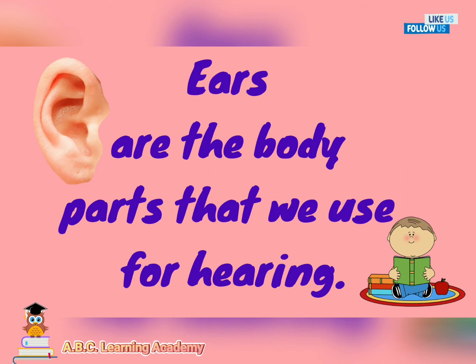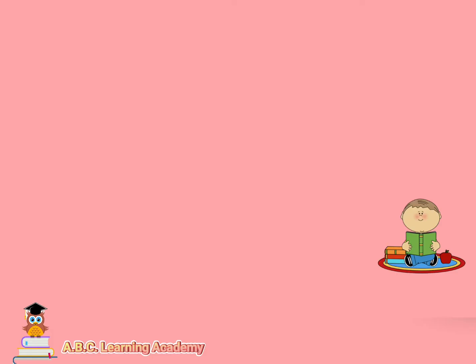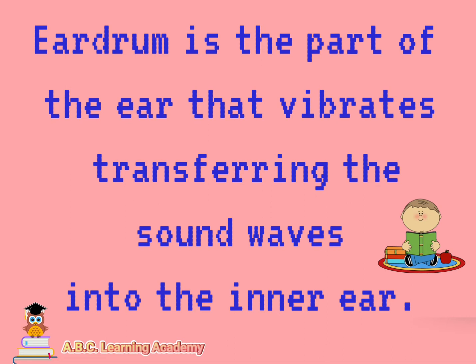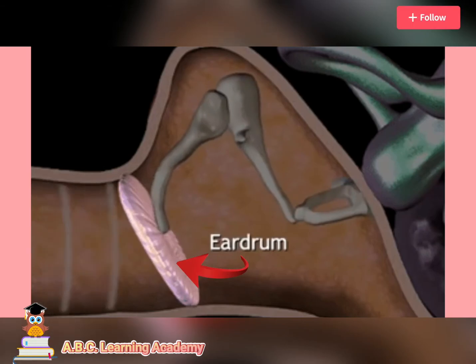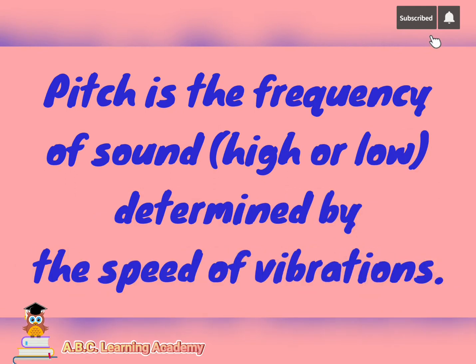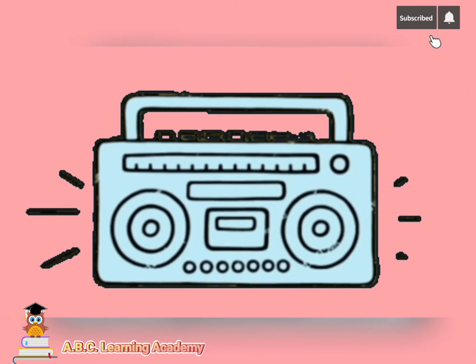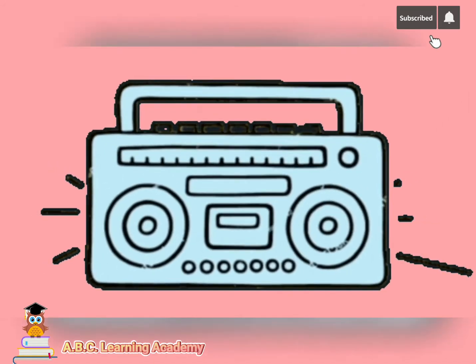Ears are the body parts that we use for hearing. Can you touch your ears? Very good! The eardrum is the part of the ear that vibrates, transferring the sound waves into the inner ear. Pitch is the frequency of sound — it may be high or low, determined by the speed of vibrations. Volume is the loudness of a sound caused by the amount of vibrations. That's why we can adjust the volume of our radio or television.